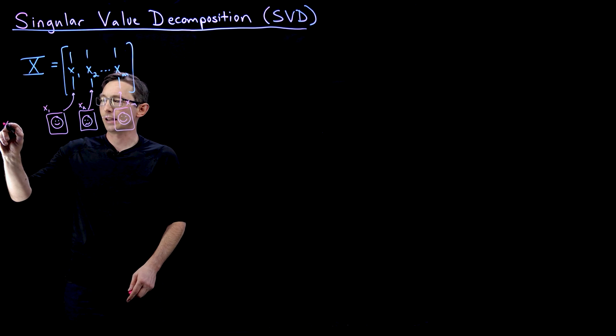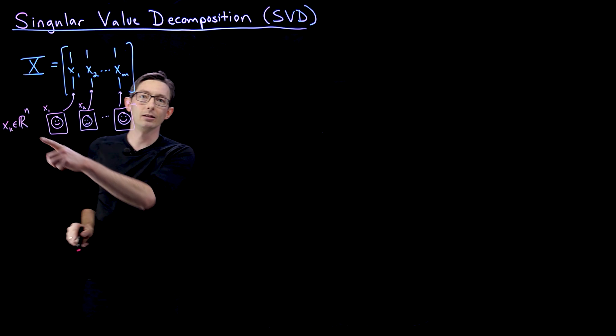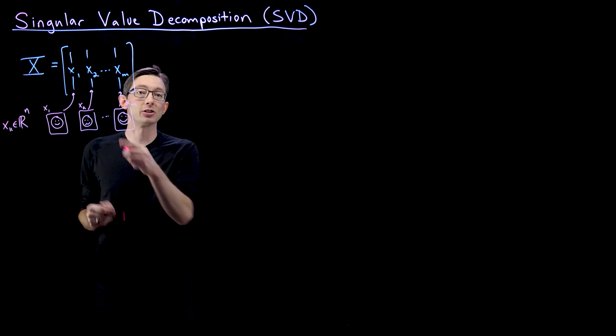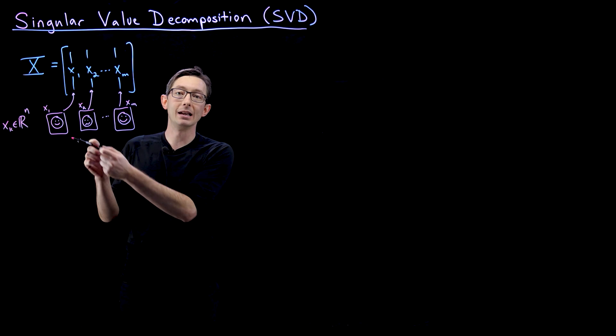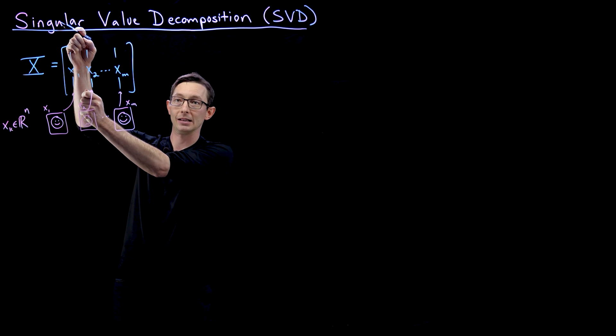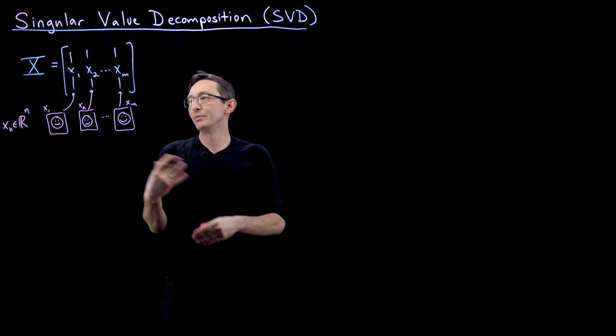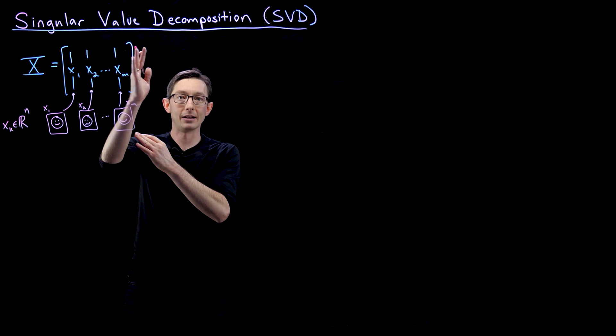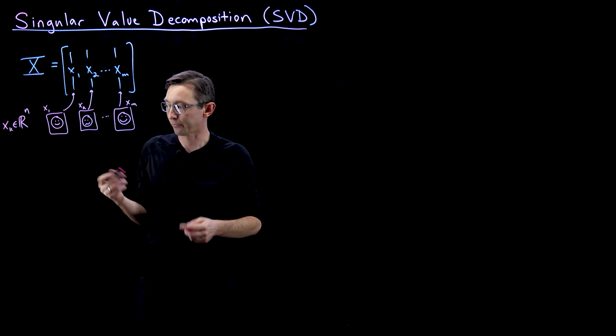And in this case, I'm going to say that Xk is in R^n, where n is the dimension of my measurement. So in this case of a megapixel image, n would be a million dimensions, a million by one vector, these reshaped X vectors, and I might have m of them, where m might be a thousand people's faces. So a thousand columns, each column has a million pixels, n equals a million.